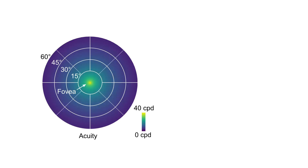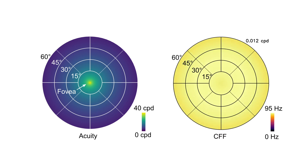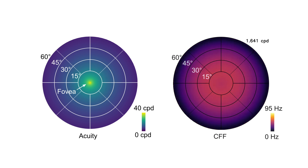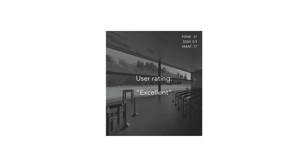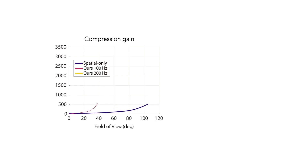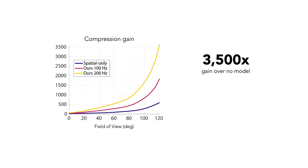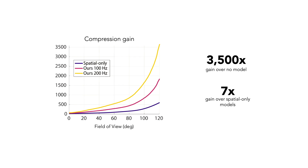Similar to current foveated graphics systems, the model fits that we derive allow us to predict visual information that cannot be perceived by a user in the spatial domain. But our model is unique in also allowing us to predict what temporal information may be imperceivable for a certain spatial frequency, eccentricity, and display luminance. We then validate the model with a user study, also showing that it predicts imperceivable spatial-temporal data better than several existing video quality metrics. Finally, we use our model to predict potential bandwidth saving factors of up to 3,500 times over unprocessed visual information and seven times over existing spatial-only foveated models.